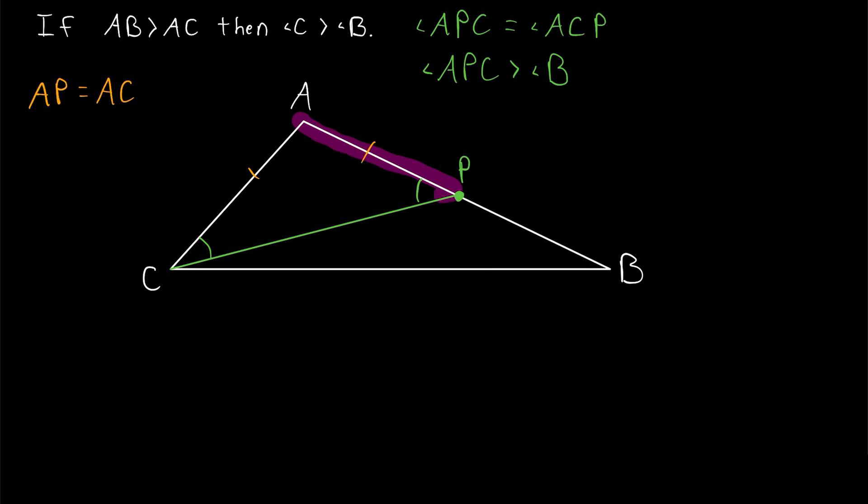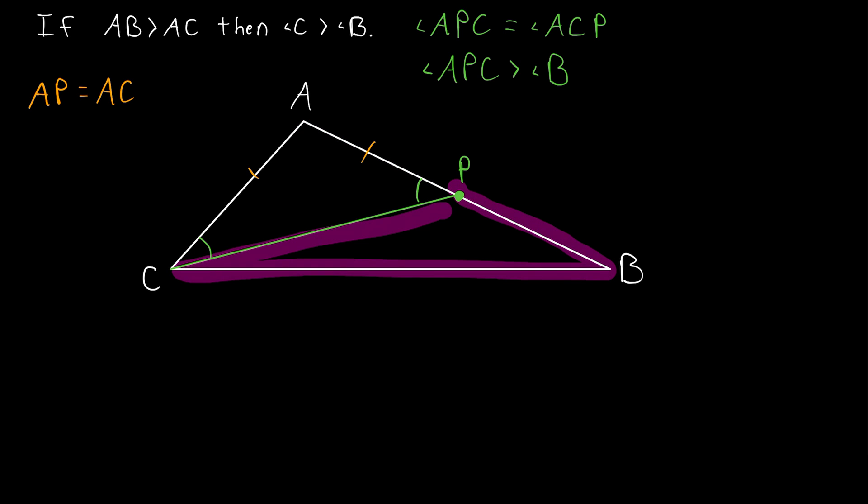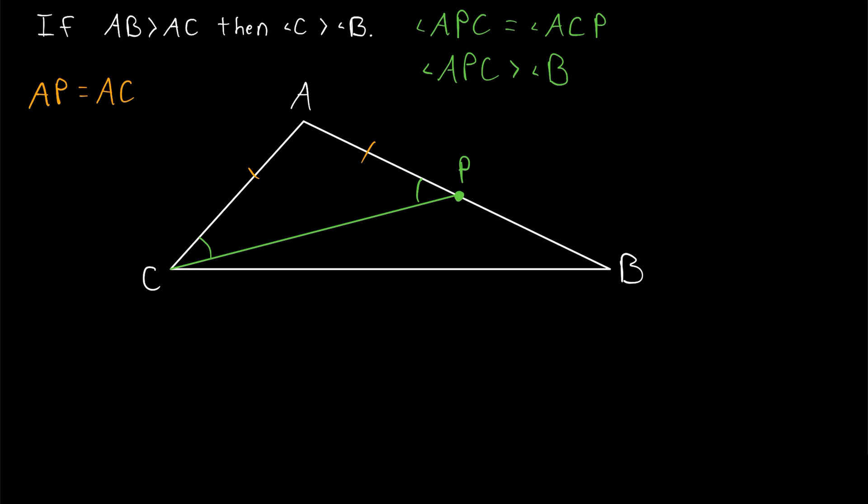Notice that angle APC is an exterior angle of triangle PBC. If you don't remember how the exterior angle theorem works, let's say we call this angle X. Obviously, X plus these two angles has to be 180 because that's the angle sum of a triangle.